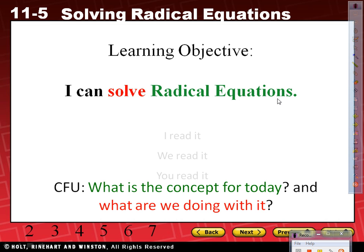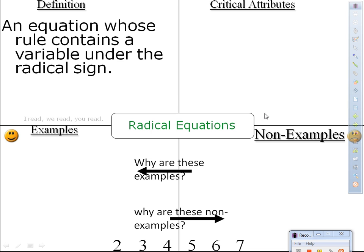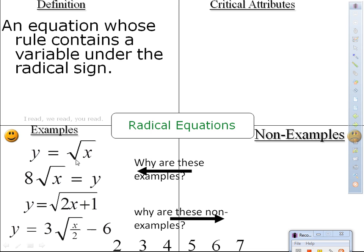What are they? Radical equations are equations whose rule contains a variable under the radical sign. Examples: y equals square root of x; a times square root of x equals y; y equals square root of 2x plus 1; y equals 3 times square root of x over 2 minus 6. Copy that.